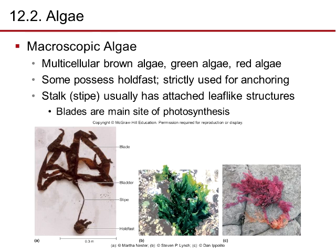Macroscopic algae include multicellular brown algae, green algae, and red algae. The stalk or stipe usually has attached leaf-like structures, and the blades are the main site for photosynthesis.